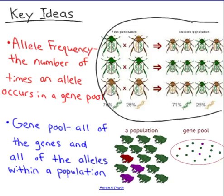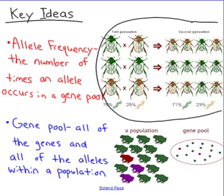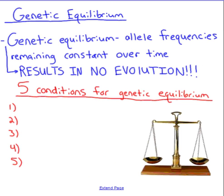The gene pool is all of the genes and alleles within a population. Here we have frogs — some green, some red, and some purple — and their colors are represented in a small circle. Another example is hair color in humans: we have black, brown, blonde, and red hair. All of those hair colors together make up the gene pool for humans. The allele frequency is what percent of the population has, for example, brown hair. So the gene pool is the whole set; allele frequency is just one allele.